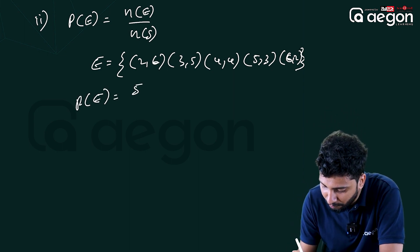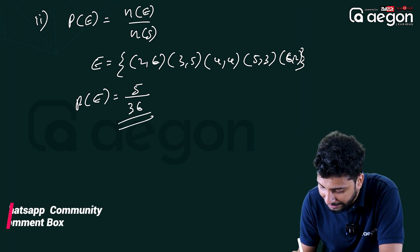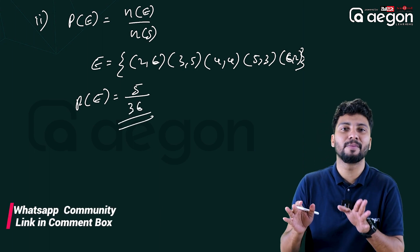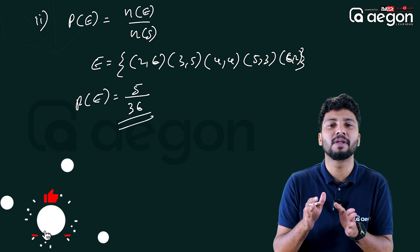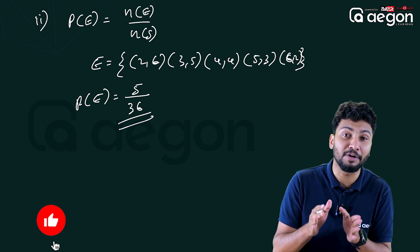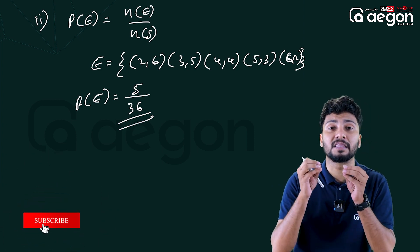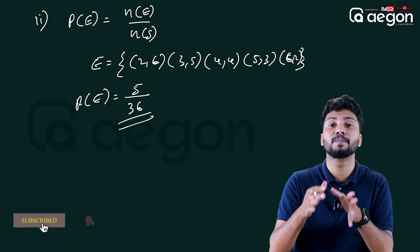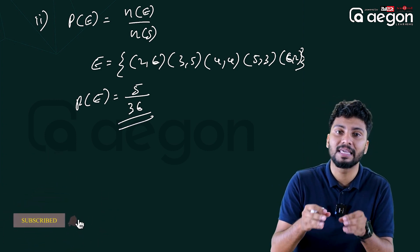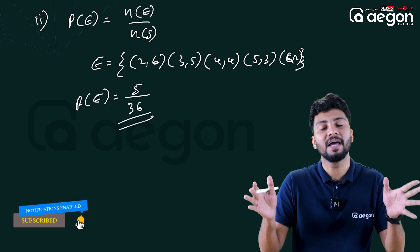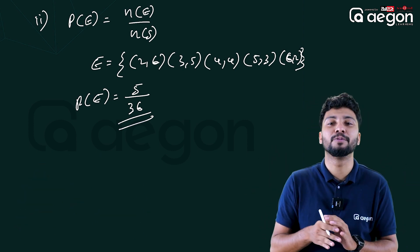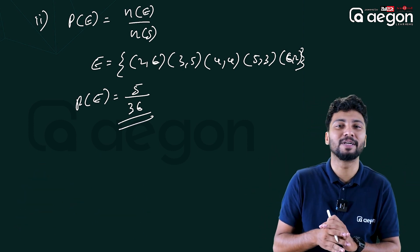Probability of E is equal to five by thirty-six. That is the answer. The key property here is the probability. I'll see you next time.